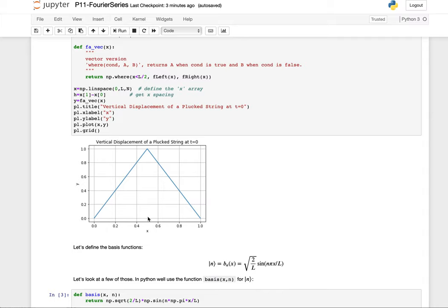But in the analysis of a plucked string, it turns out it's convenient to expand, to think of the shape of the string as a superposition of eigenvectors, in the same way that it's convenient to think of the initial displacement of the masses in the coupled oscillator problem as a superposition of eigenvectors.